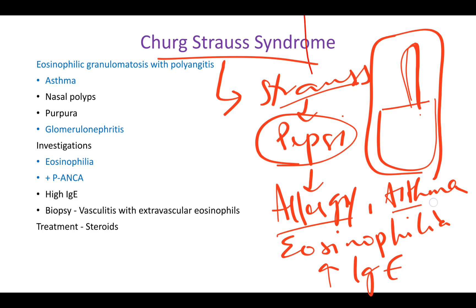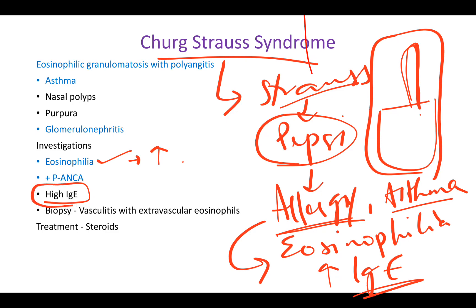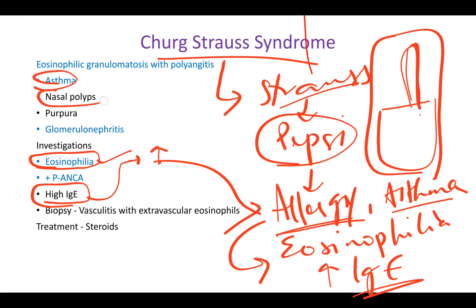As soon as he had this Pepsi, he got asthma symptoms and allergy symptoms, because he's probably allergic to Pepsi. That leads to eosinophilia — increased eosinophils in your blood — and increased IgE. These two are associated with allergy and asthma. We also have nasal polyps, and this Pepsi helps you remember P-ANCA.